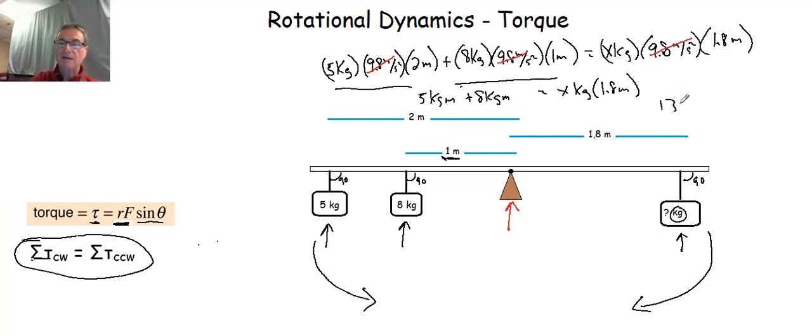we get 13 kilogram meters is equal to 1.8 x kilogram meters. We divide each side by 1.8, and what we get for the number of kilograms that's going to have to be on the right hand side is about 7.22 kilograms.